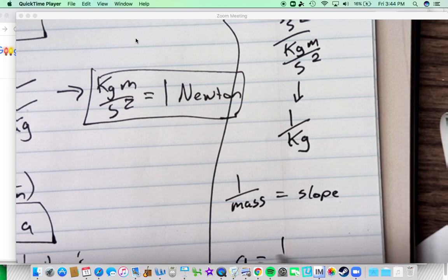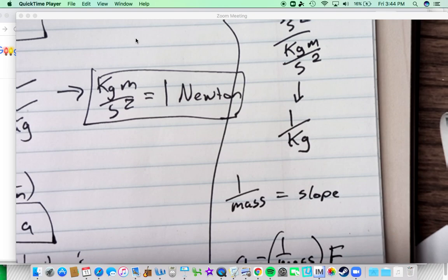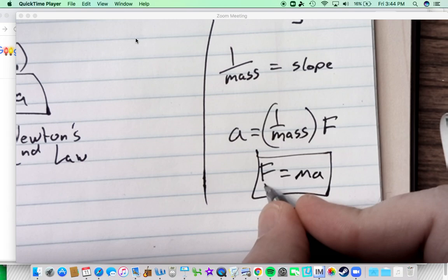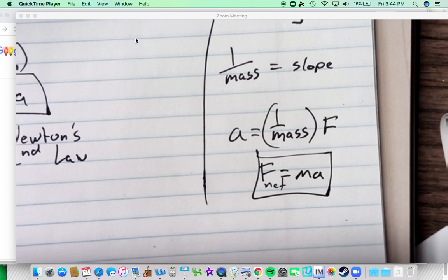But going back to that, plugging one over mass in for the slope, we have one over the mass times force. So that, again, gets us Newton's second law. And this was the big takeaway from this lab.